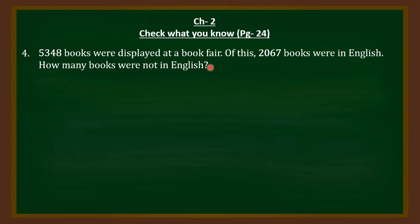I'll just explain this question with the help of a very simple example. Suppose you have 10 candies. Out of those 10 candies, 7 are blue and you want to find out how many candies have the color yellow. So what will you do to find out that? You will subtract 7 from your total candies which is 10, and you will get the number of candies which are yellow.